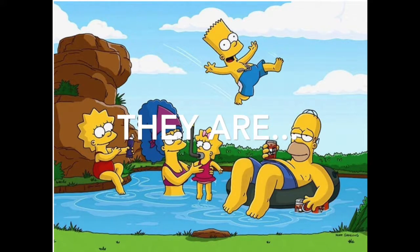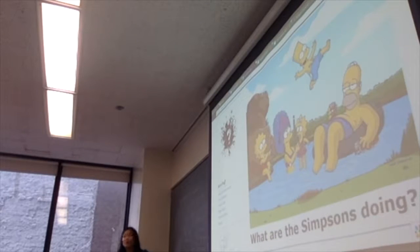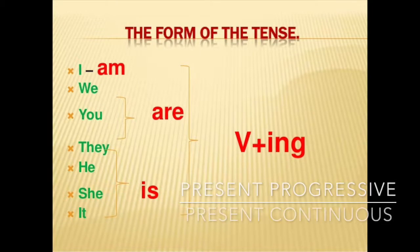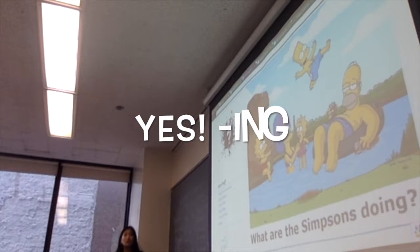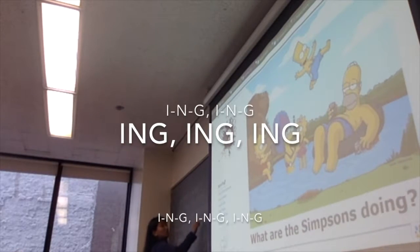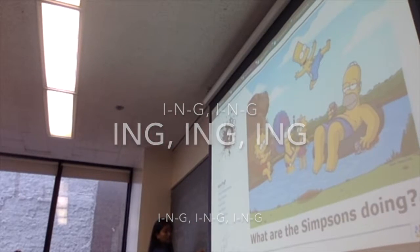This here is what we call present continuous or progressive. Continuous means something that's happening right now, continuing on and on for a while. Progressive means happening right now.